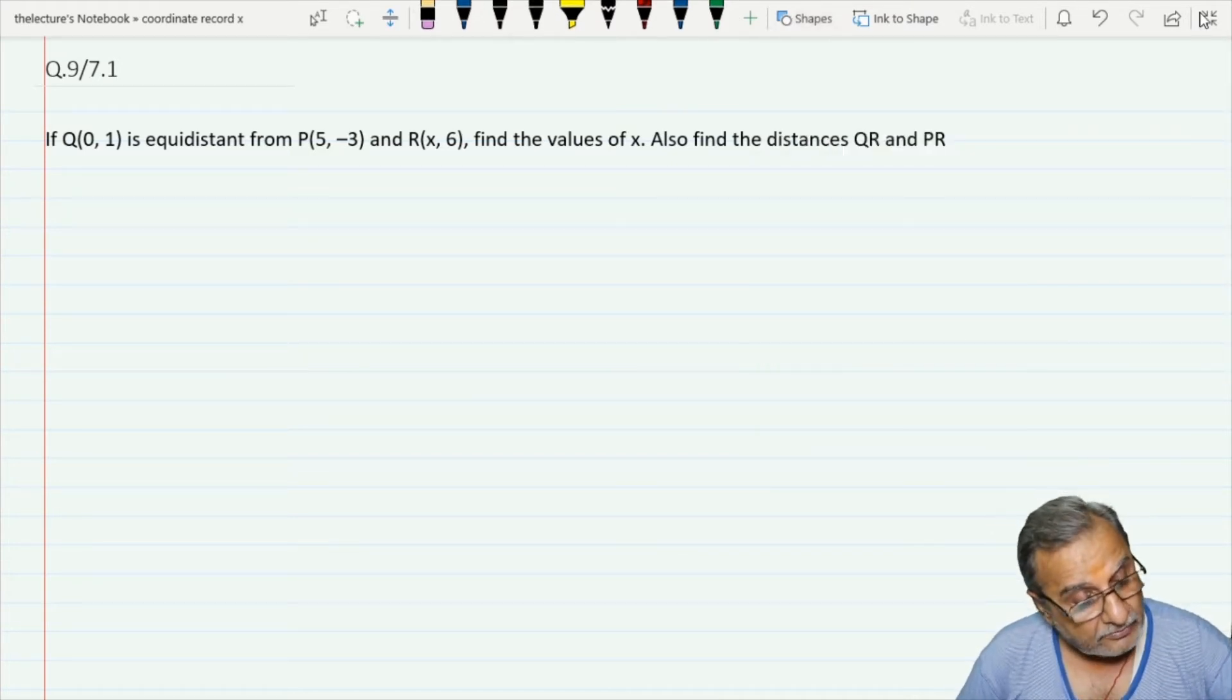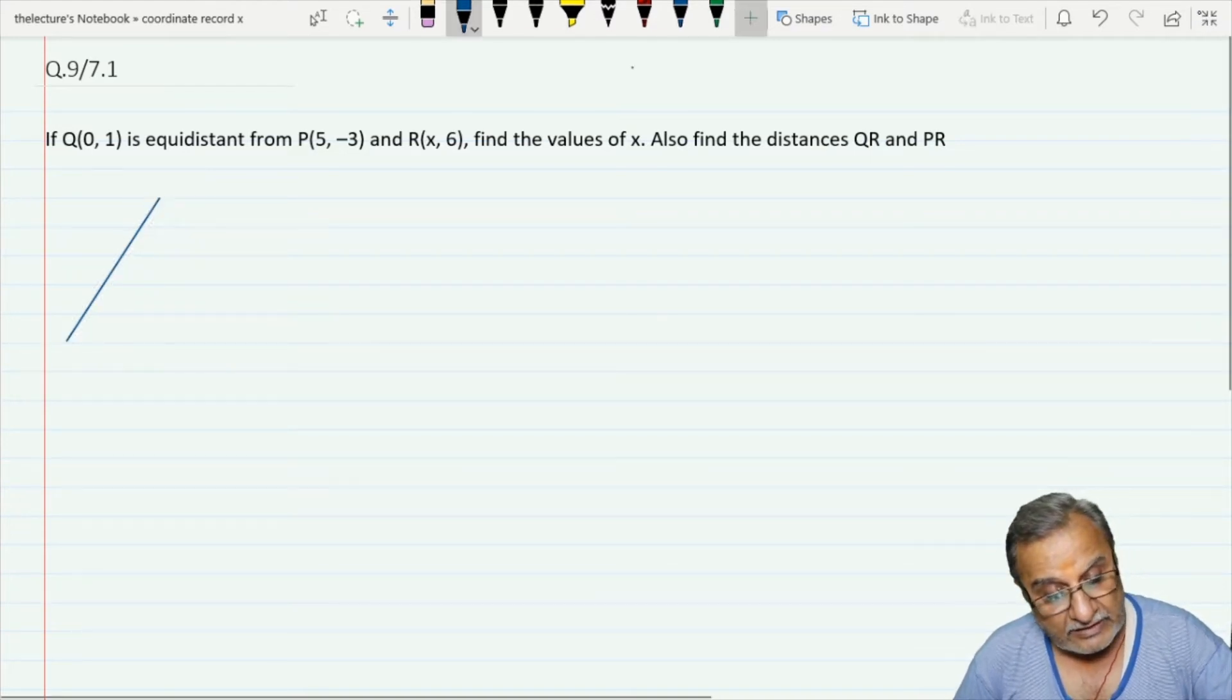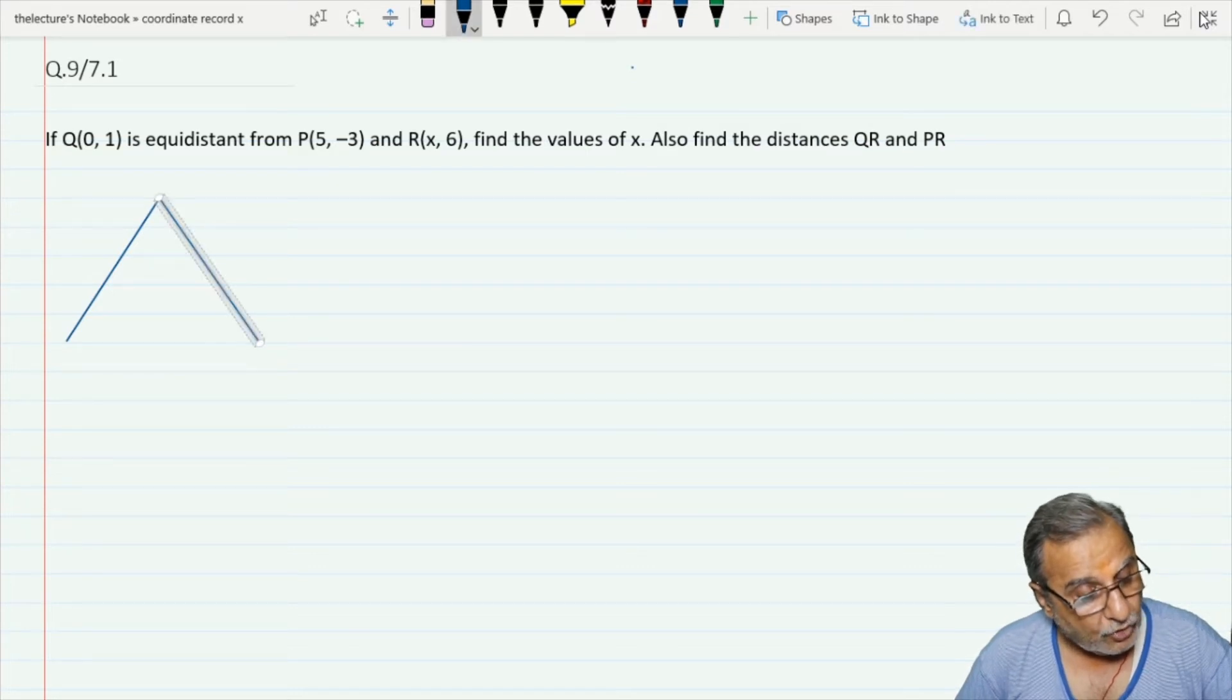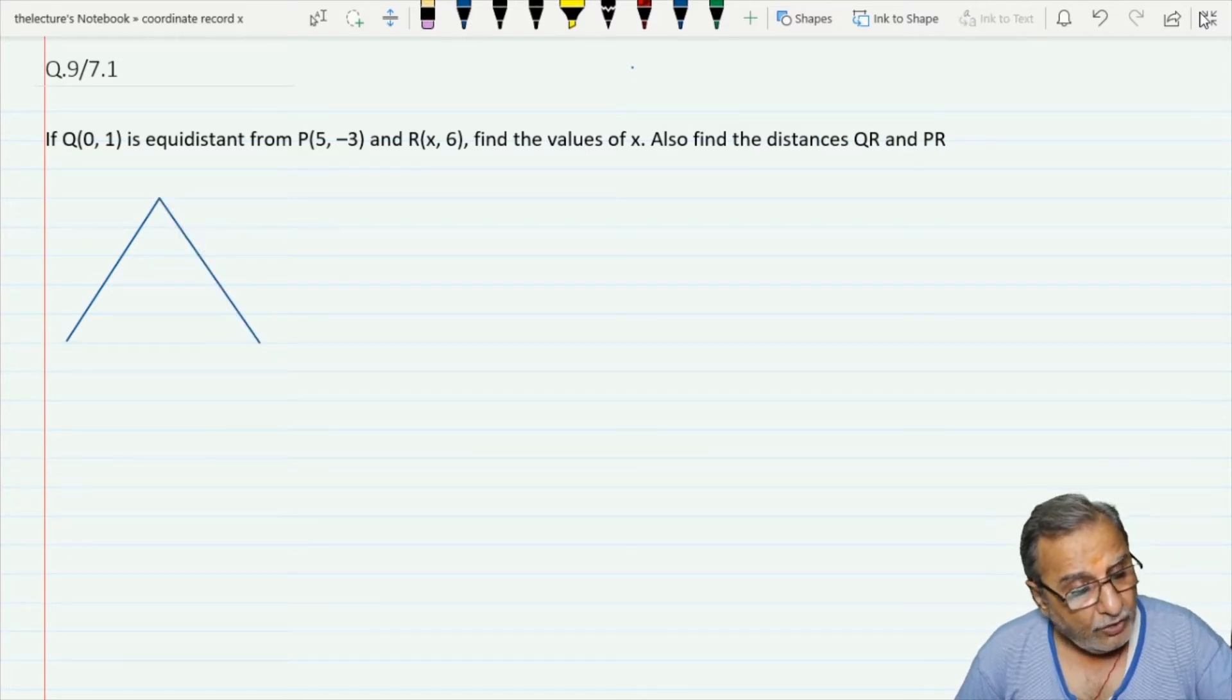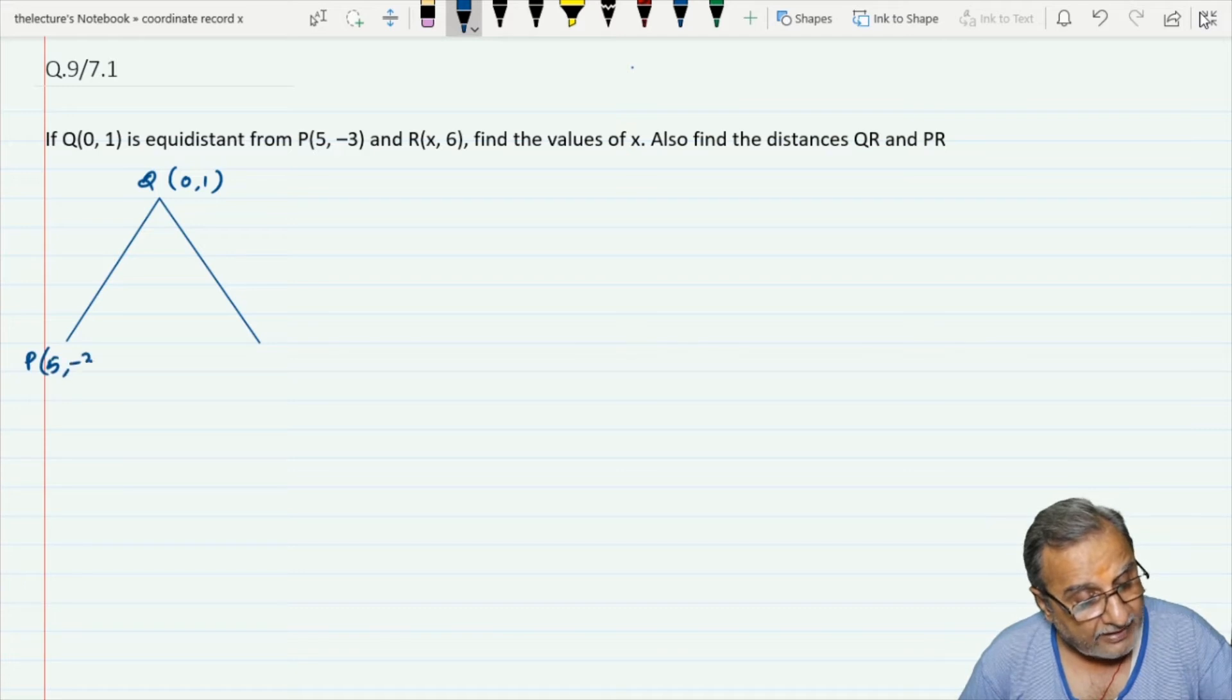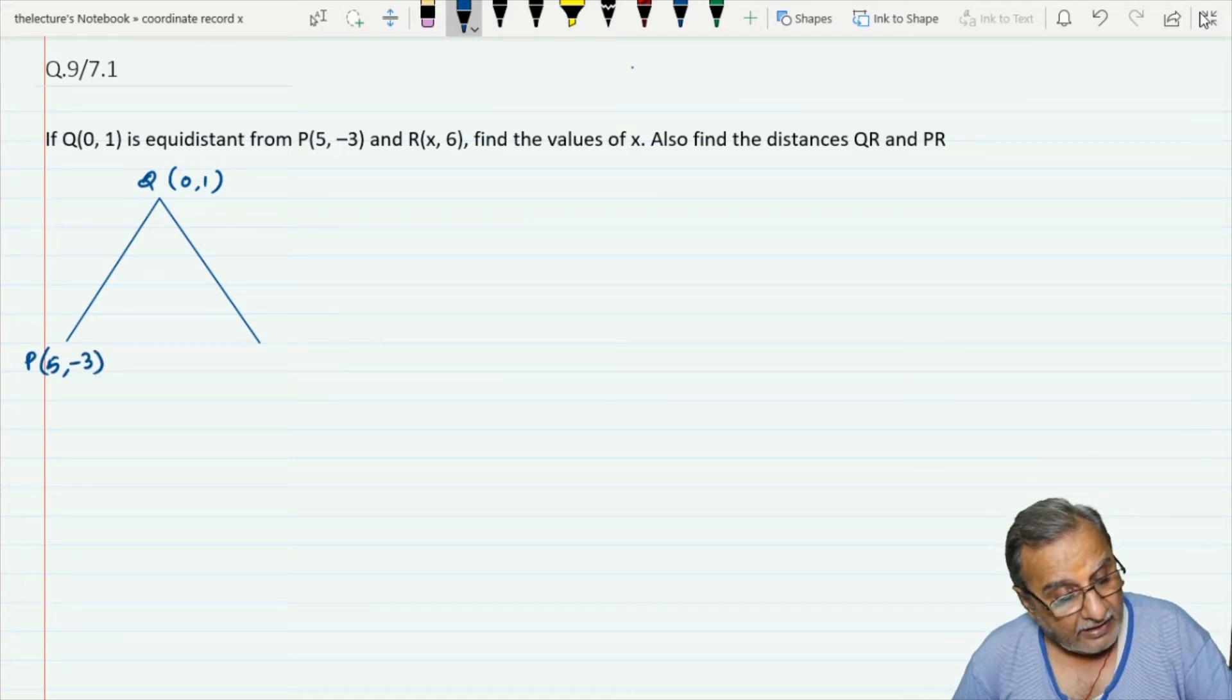Let me draw this question. Since Q is equidistant, I will take Q(0,1), P(5,-3), and R(x,6).